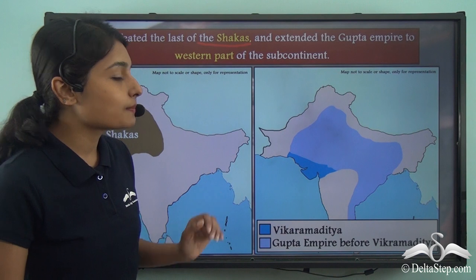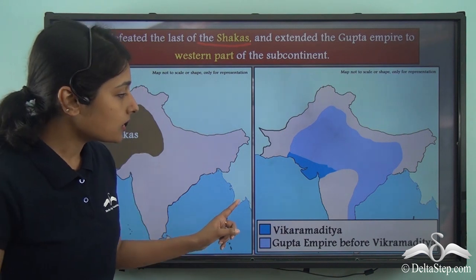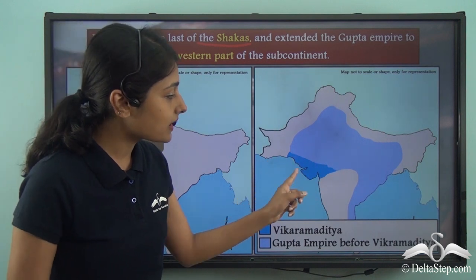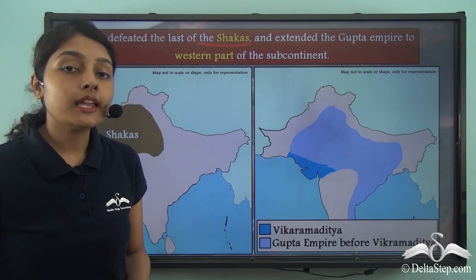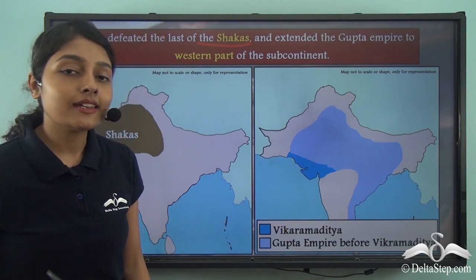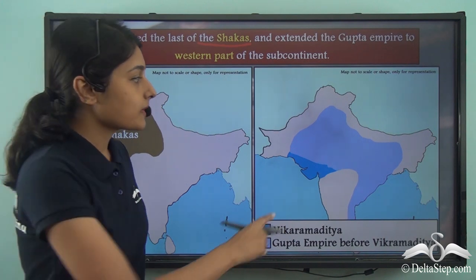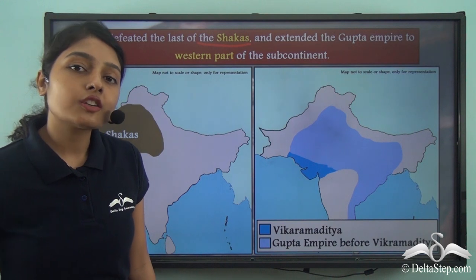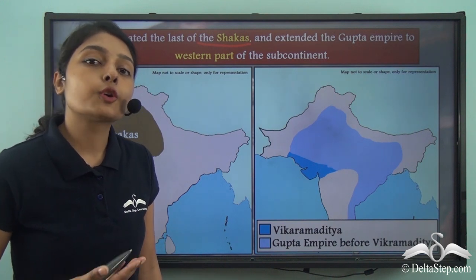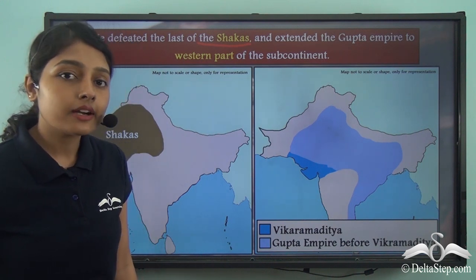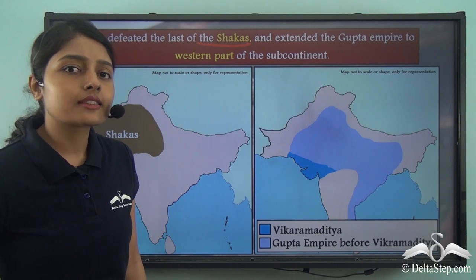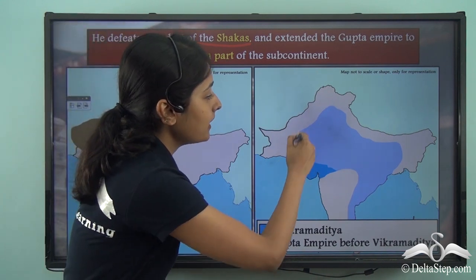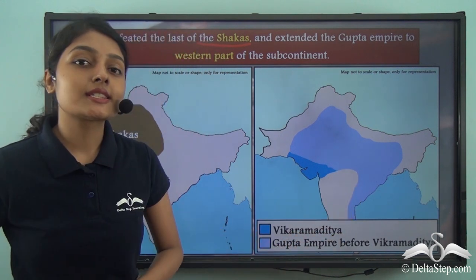Now look at this map very closely. Here you can see the indigo colour shows the region that was conquered by Vikramaditya and annexed from the Shakas. This is the area that was already under the control of the Gupta Empire, and by further annexing the territory of the Shakas, the Gupta Empire became this huge in size.